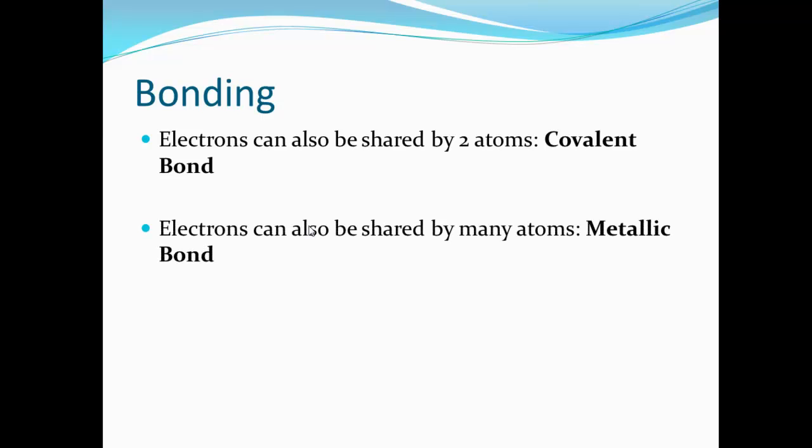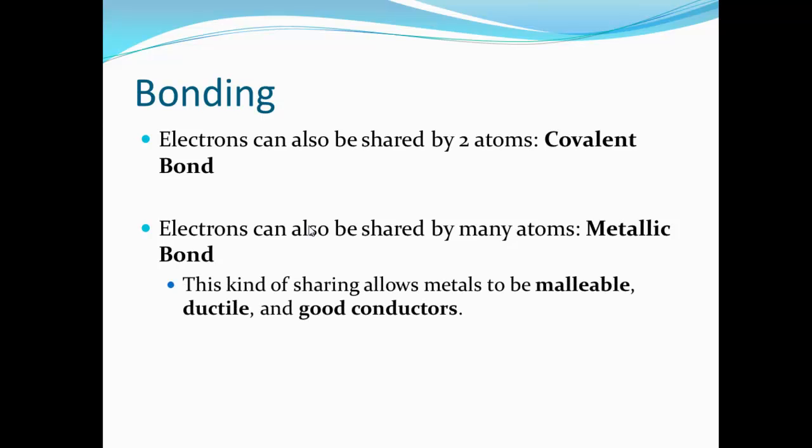There's also one final one. It's called a metallic bond. And this is actually when many atoms share many electrons. It's kind of like a chicken noodle soup where the broth is this electron cloud and the chunks of chicken are your positively charged nuclei of the atoms. They're just kind of floating around. They're all sharing those electrons.